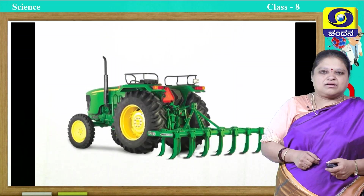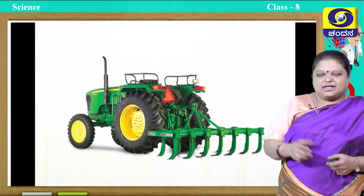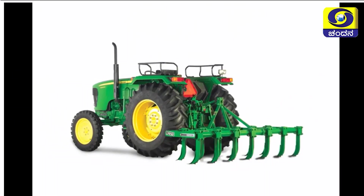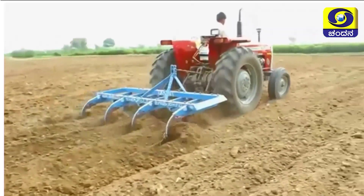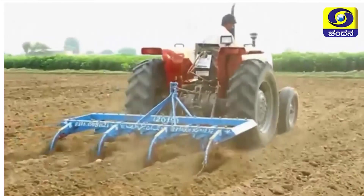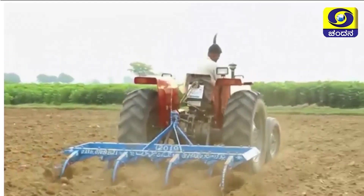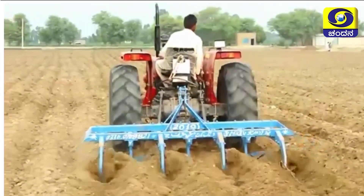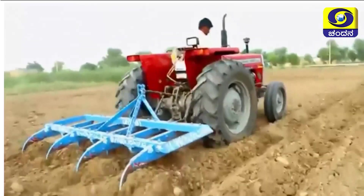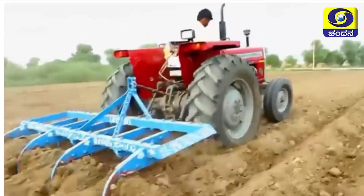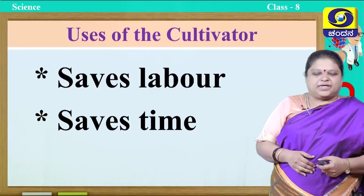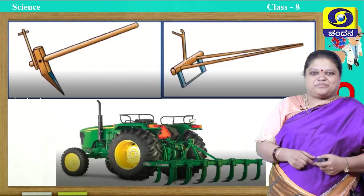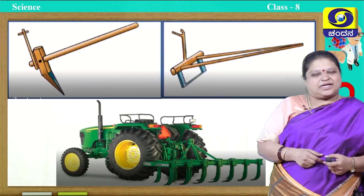Next, we will see what is this cultivator. These are cultivators — they are usually attached to the tractor for fast movement. It saves energy and time of the farmers. You can see it is very sharp; it immediately and swiftly tills the land. Since it is attached to the tractor, the work becomes very fast. The uses of the cultivator: it saves labor and also time. These are the different equipment meant for preparation of the soil.